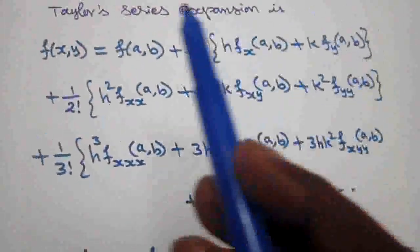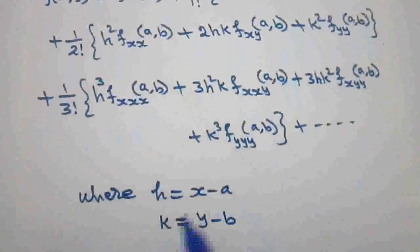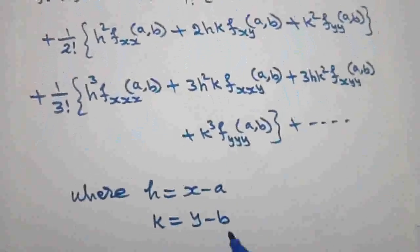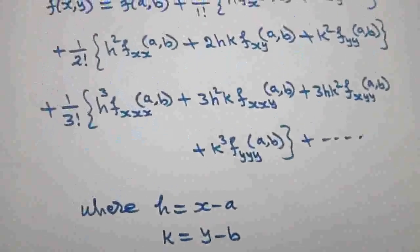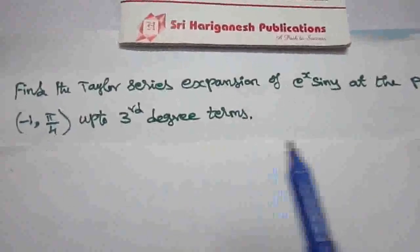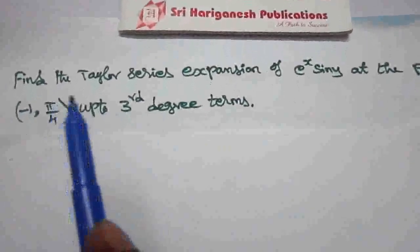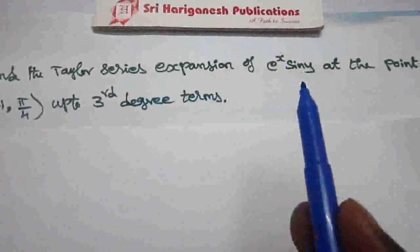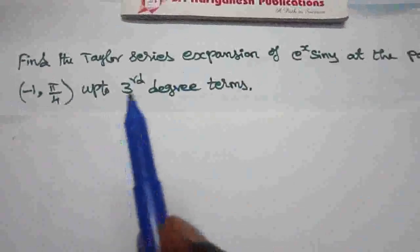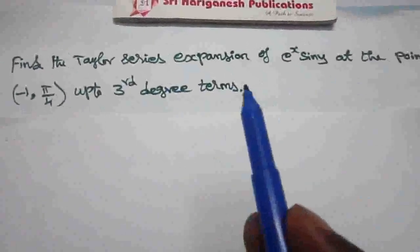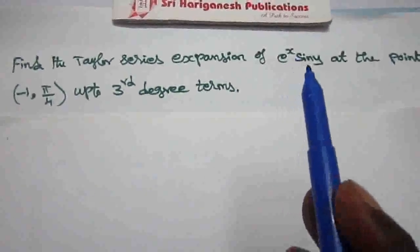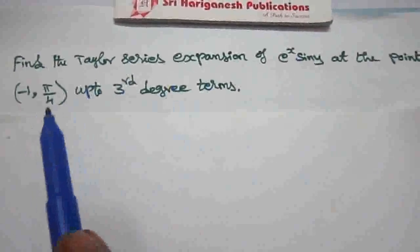This is the formula for the Taylor series expansion, where h = x − a and k = y − b. Now, one problem based on the Taylor series expansion: find the Taylor series expansion of f(x,y) = e^x · sin(y) at the point (−1, π/4), up to 3rd degree terms.